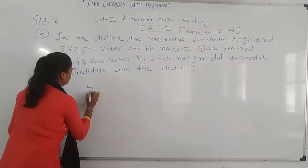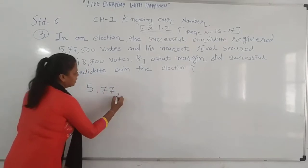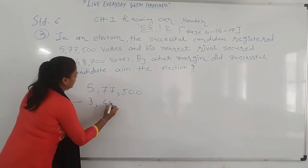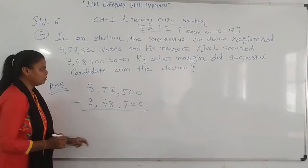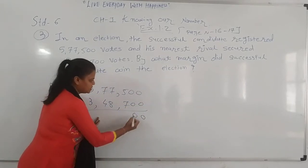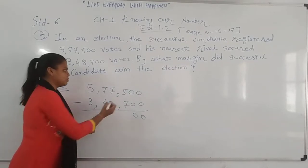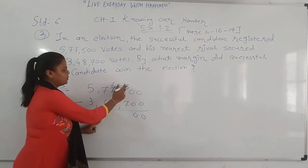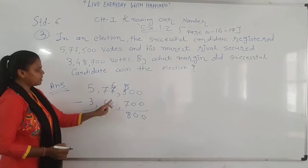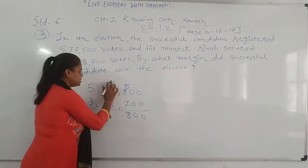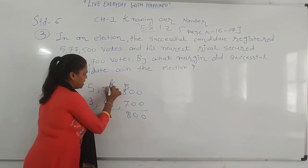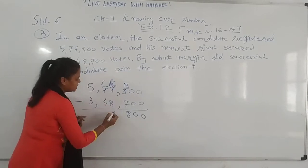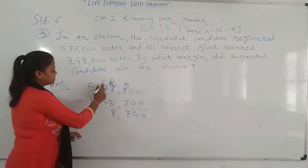So: 5,77,500 minus 3,48,700. 0 minus 0 is 0. 5 minus 7 is not possible, so we borrow: 15 minus 7 is 8. 6 minus 8 is not possible, so we borrow again: 16 minus 8 is 8. 6 minus 4 is 2. 5 minus 3 is 2. So the margin is 2,28,800.